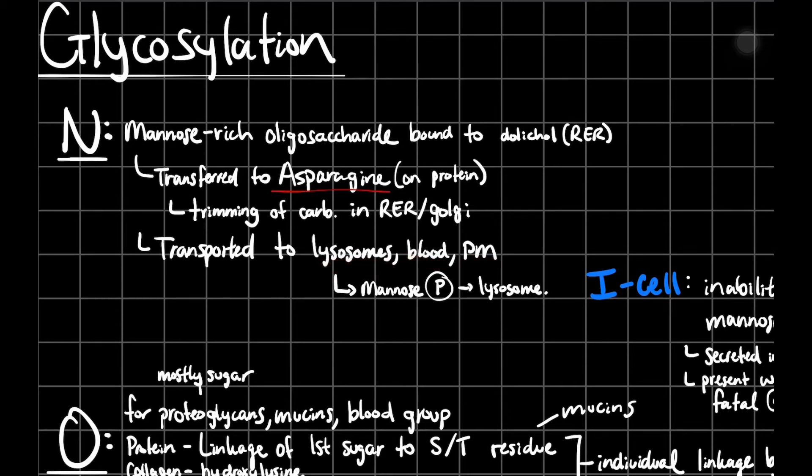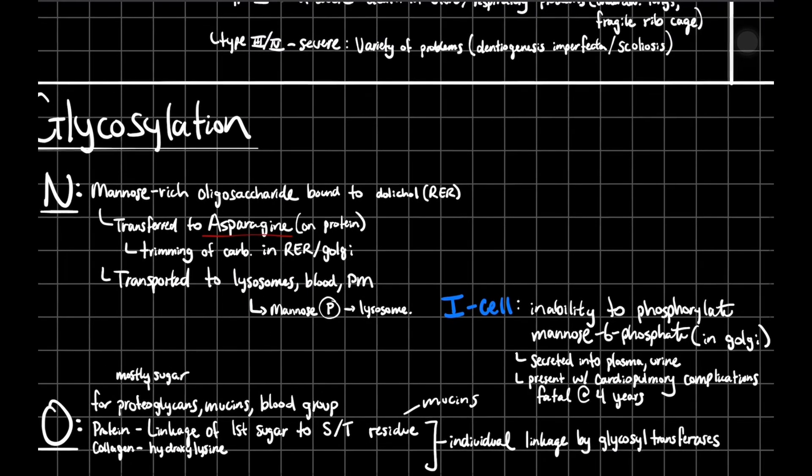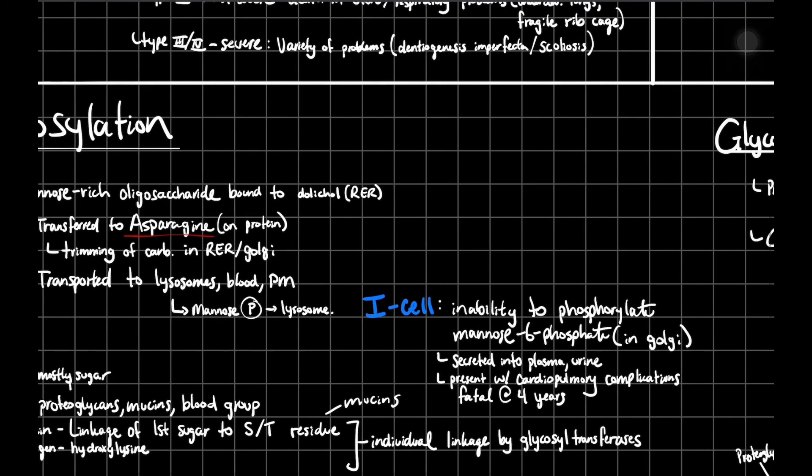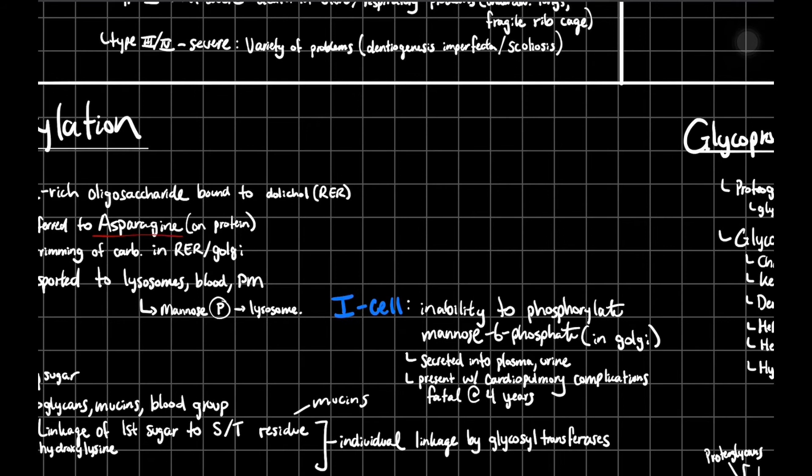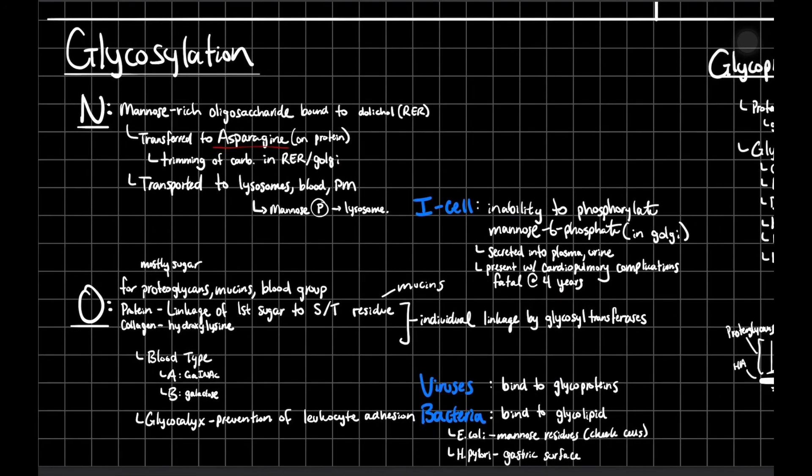For lysosomes, lysosomes use these special residues, glycosylated residues, or glycosylated proteins. You're basically going to have that mannose phosphorylated on that mannose-6-phosphate. So if that doesn't happen, then you can have I-cell disease, which is the inability to phosphorylate your mannose-6-phosphate in your Golgi. That leads to these proteins, proteoglycans, secreted into your plasma in your urine. As a result, you can have cardiopulmonary complications. These patients typically die at four years of age.